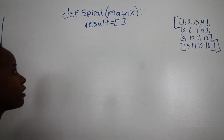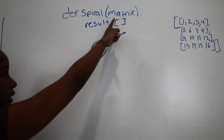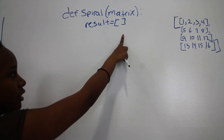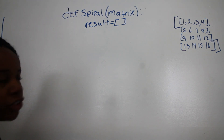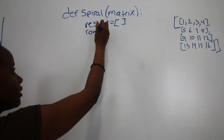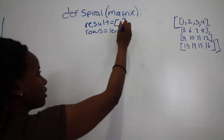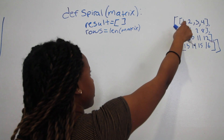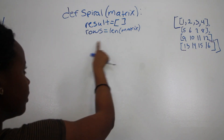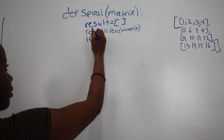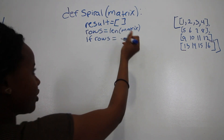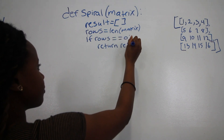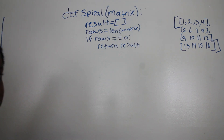Here we've created a function called `spiral`, and it has an argument which is the matrix. We've also created a variable that is a list — this is what we will be returning, the end result. Then we create a variable called `rows`, and rows is going to be the length of the matrix, which is four in our example. Our first edge case: if rows equals zero, return result — that will just return an empty list.